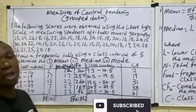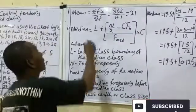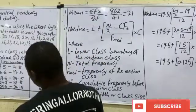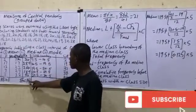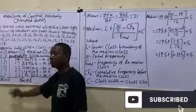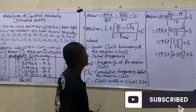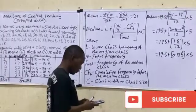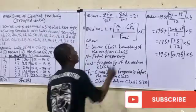Once you have this table, the question is as good as solved. Calculate the mean using the formula: mean = Σfx / Σf. The sum of fx is 862 and the total frequency is 41. So the mean = 862 / 41 ≈ 21.